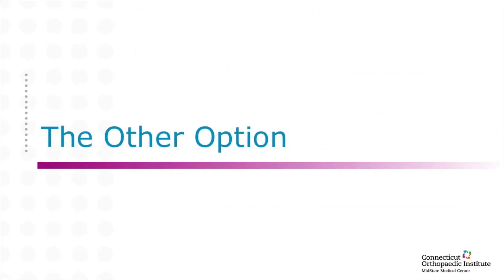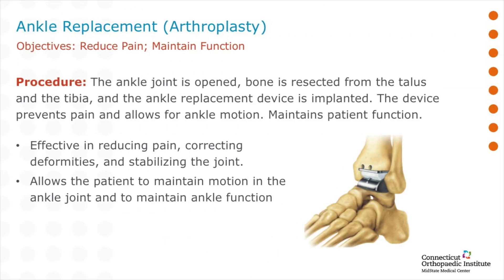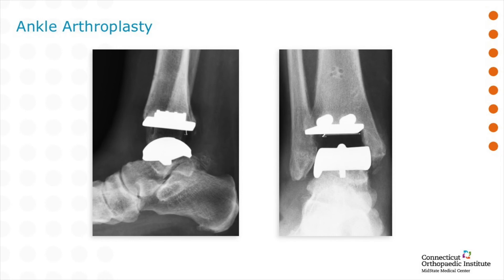That brings us to the other option — the new direction in which orthopedics and specifically foot and ankle orthopedics is going regarding ankle arthritis. Total ankle replacement, or total ankle arthroplasty, is a surgery where the goal is to reduce your pain while still managing to maintain the motion of the ankle, so you maintain function with the benefit of improving your quality of life. It's a combination of metal components with a plastic spacer in between — we're just taking out the arthritic bone and replacing it with components without making the leg shorter or longer.